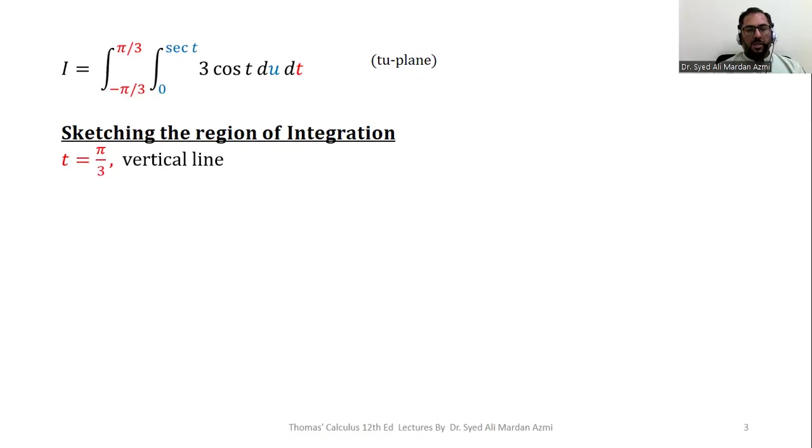So we see that the limits of the outer variable t are minus π/3 to π/3. So t equals π/3 and t equals minus π/3 will provide us two boundaries, and these are vertical lines in our region. u equals 0 is our horizontal axis, or t-axis.